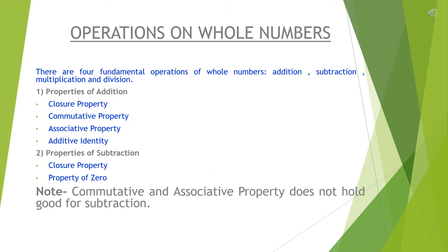Second, properties of subtraction. Subtraction satisfies only two properties: first, closure property; second, property of zero. Note that commutative and associative property does not hold good for subtraction.